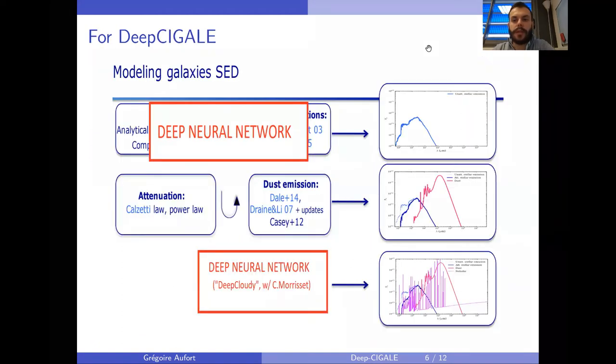For Deep CIGALE we chose to apply this methodology, but in order to keep the modularity of the original software, we only approximate the parts of the code which are very expensive in terms of computations. This allows us to retain the modularity for every user who wants to plug in their own module while still accelerating significantly the computation speed.